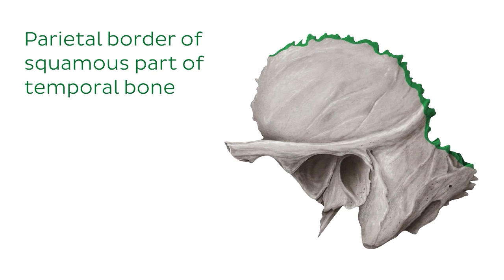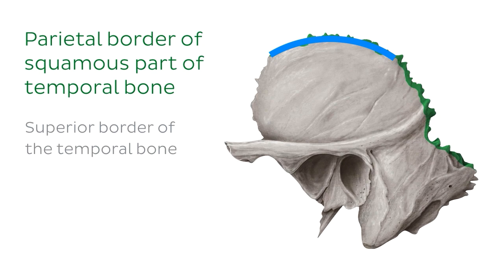The first border we'll look at is the parietal border of the temporal bone. As you can see, this border is quite irregular or jagged in shape. This is also known as the superior border and overlaps the inferior border on the parietal bone. The area where these two borders overlap is known as the squamous suture, which you can see here in green in this lateral view of the skull on the right.